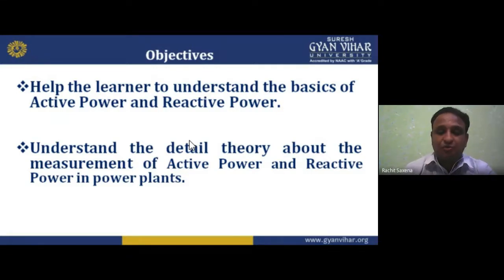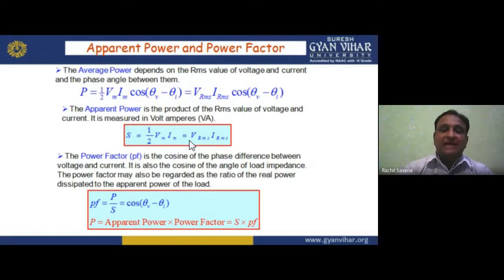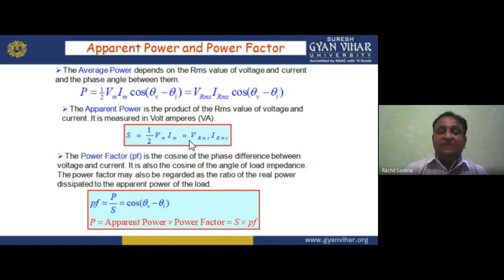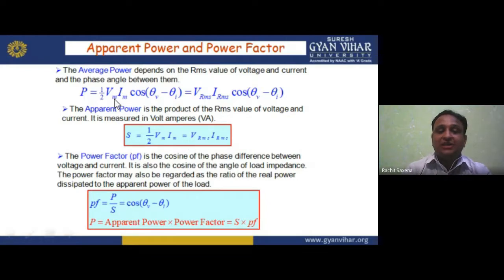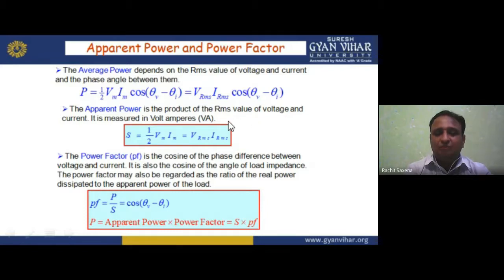The objectives of this lecture are to help students understand the basics of active power and reactive power, and the detailed theory of measuring active and reactive power. The average power depends on the RMS value of voltage and current and the phase angle between them: P = (1/2)·Vm·Im·cos(θv − θi) = Vrms·Irms·cos(θv − θi). Apparent power S = Vrms·Irms, measured in volt-amperes (VA).